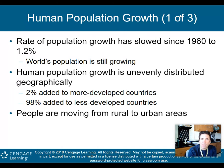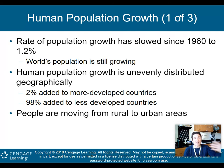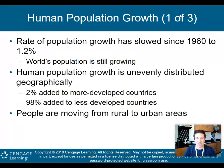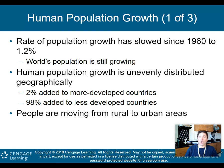The rate of population growth has slowed since 1960 to about 1.2 percent, but the world's population is still growing — it's just not growing evenly. Of the population being added, 2 percent is coming from more developed countries like the US and EU nations, while 98 percent is coming from less developed countries like India and much of Africa. People are also moving from rural to urban areas, which is changing population growth as well.